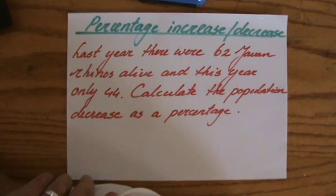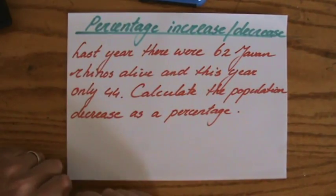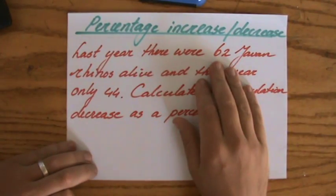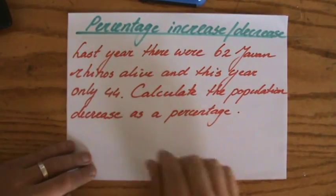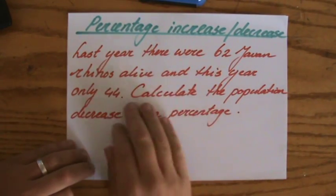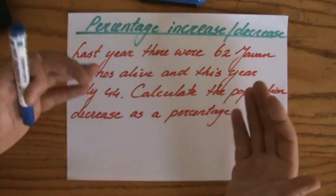Okay, percentage increase and decrease. This is quite a sad story, actually. Last year there were 62 Javan rhinos alive, and this year only 44 of them are still alive. Calculate the population decrease as a percentage.